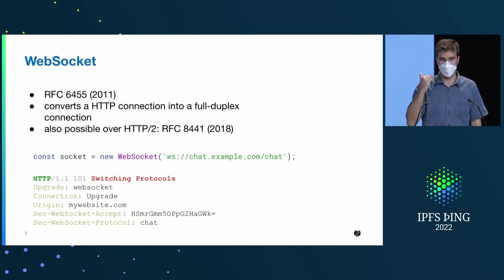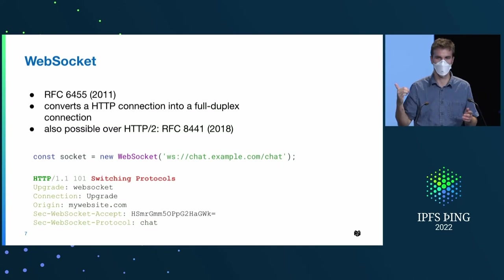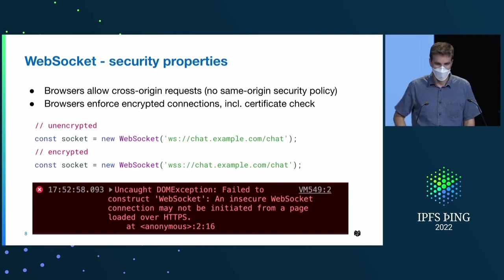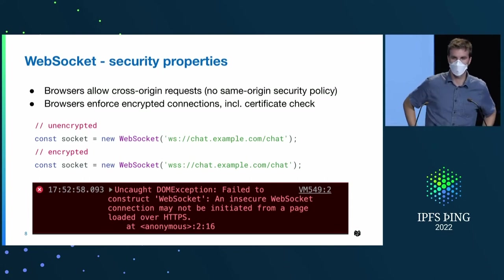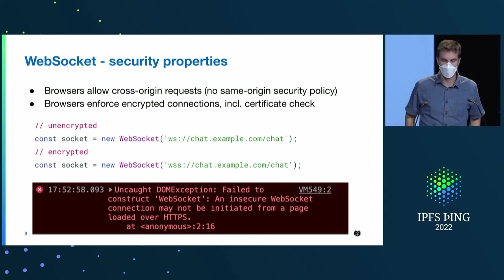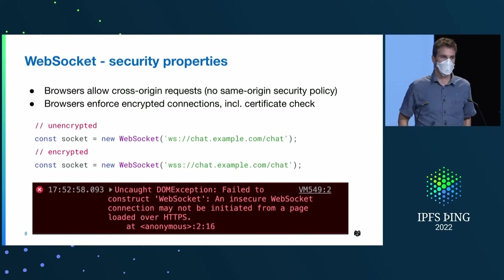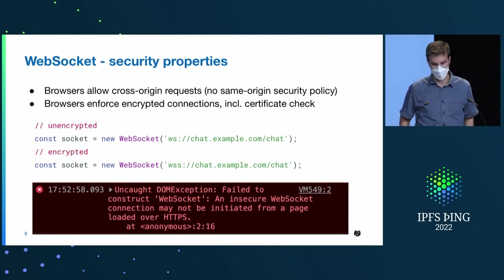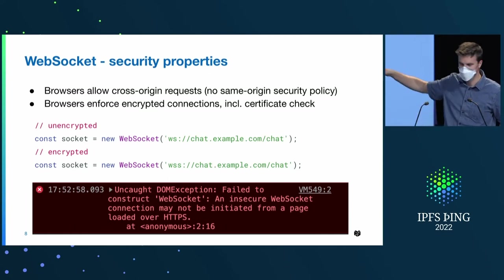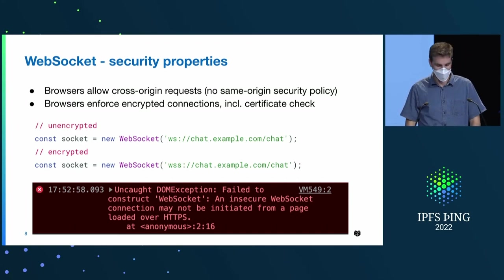If the server agrees to the WebSocket upgrade, this basically means we are not doing HTTP anymore — we are now using the raw underlying TCP connection from that moment on. There's also a way to do this over HTTP/2, so you can have multiple streams on top of the same connection. The problem with this is the browser will enforce encrypted connections. So if you loaded a website via HTTPS, which is basically every website nowadays, the browser will just not let you establish a WebSocket connection. You need to do a WebSocket secure connection.